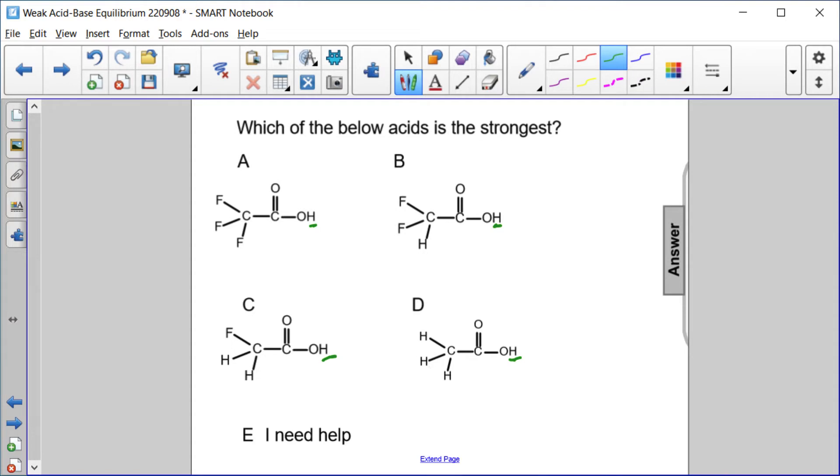For each one, here we have three hydrogens, two hydrogens and one fluorine, two fluorines and one hydrogen, three fluorines and no hydrogen. What's the effect of adding those fluorines?